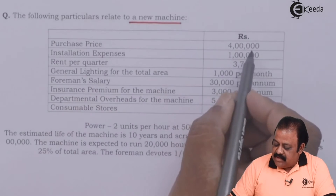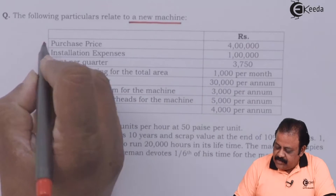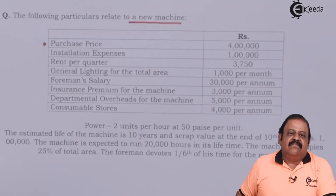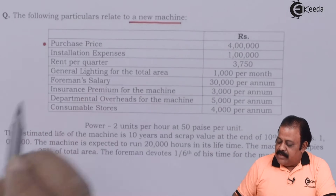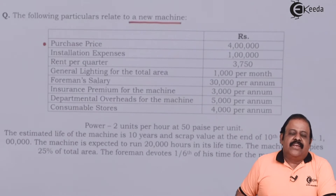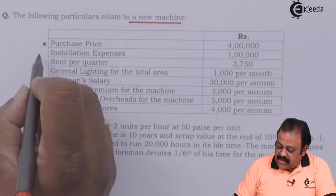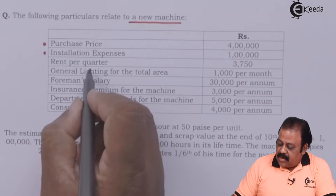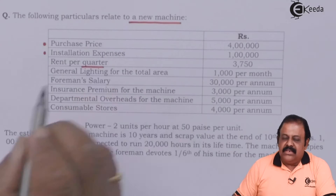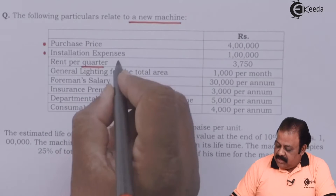The following particulars relate to a new machine. Purchase price is given four lakhs — this is the value of machinery which will be used to calculate depreciation. Installation expenses are capital expenses and are required to be added to the purchase price. Rent is given per quarter, that is for a period of three months.